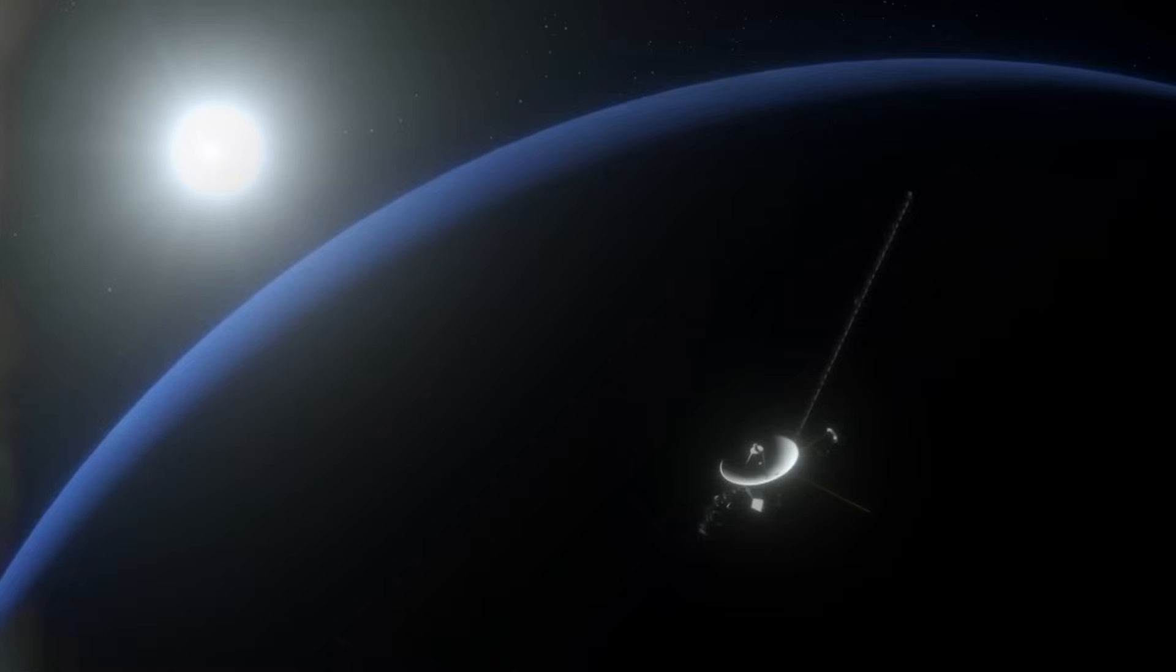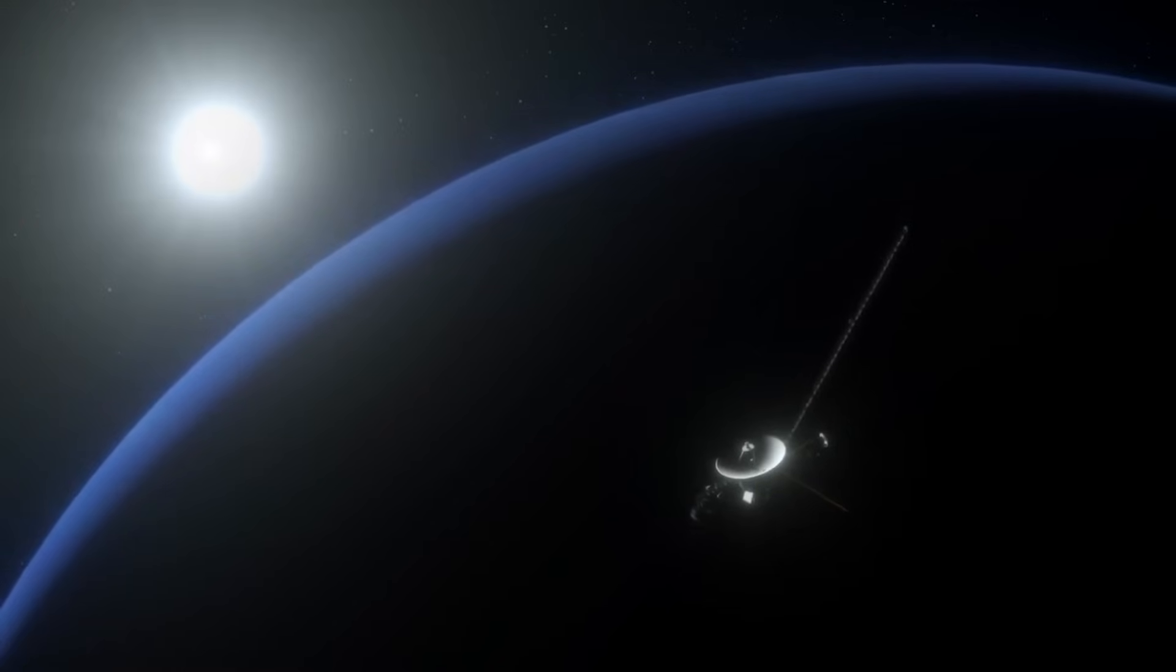It wasn't just an error, it was incomprehensible. Telemetry data was being routed through an onboard computer that had been declared dead for years. Even more bizarre, Voyager 1 was clearly still pointing at Earth. The signal was strong, the instruments were stable, and the science data kept flowing in as if nothing was wrong.